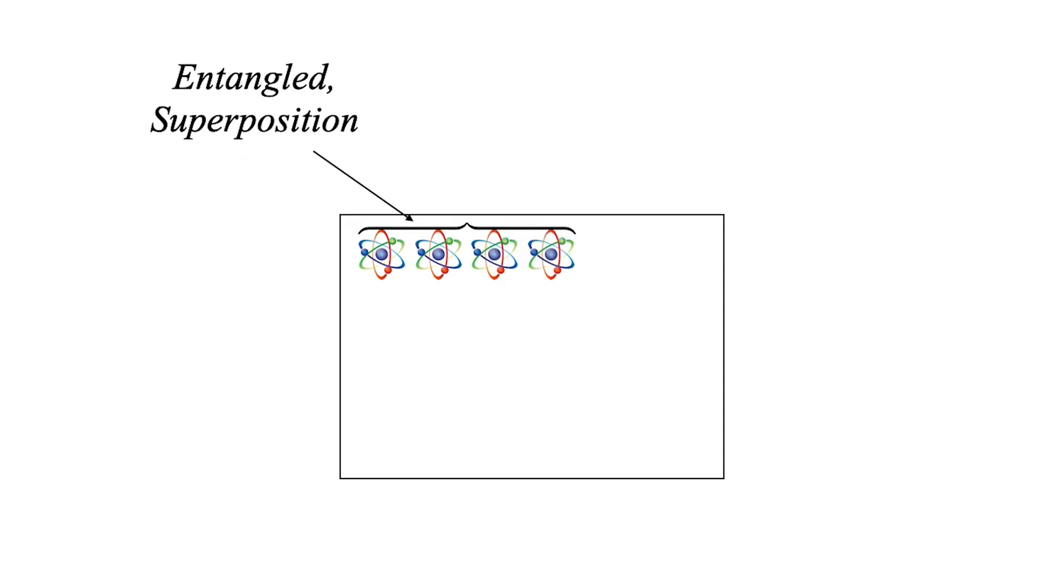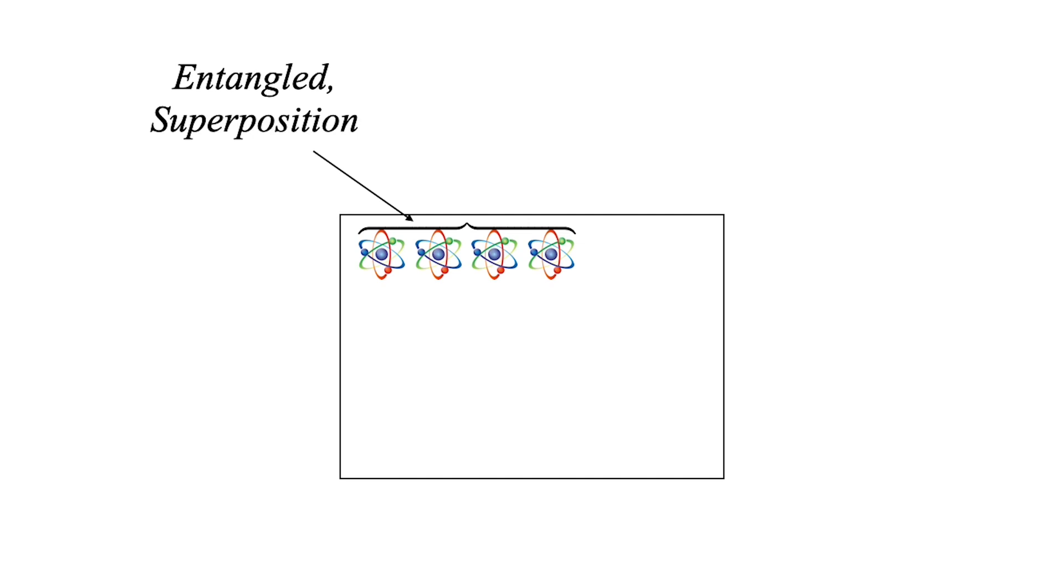When that electron interacts with other electrons, then those electrons don't measure the first one, rather they become entangled. And now they're all together in a superposition.